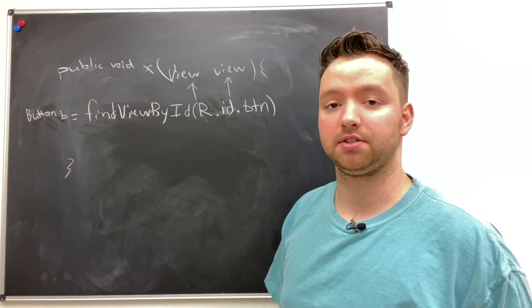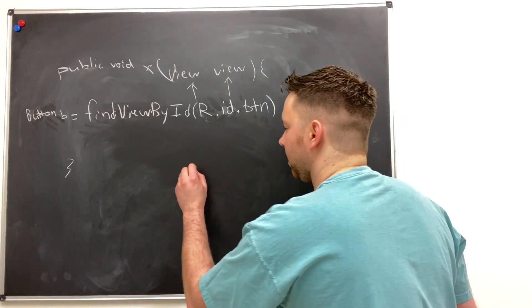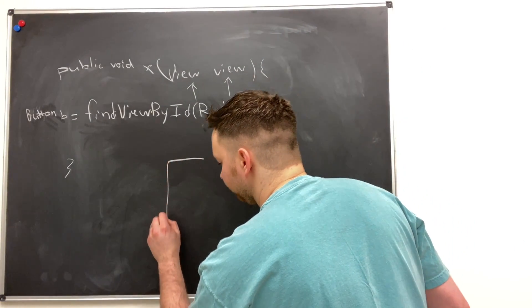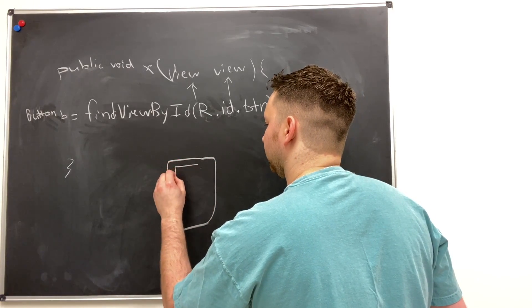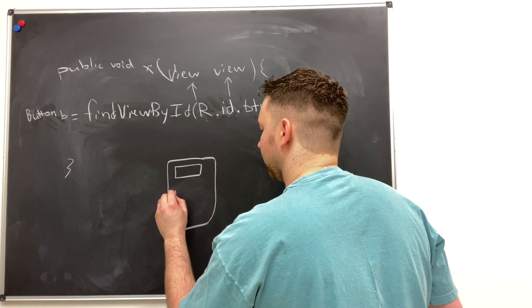So let's go over another example of how this could be useful. Let's say we have our activity and on here we have a button and we have some text.